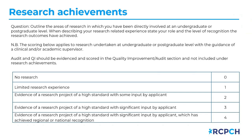The fourth domain is research achievements. Outline areas of research you've been directly involved in at undergraduate or postgraduate level, stating your role and the level of recognition the research outcomes have achieved. This includes research undertaken with guidance of a clinical or academic supervisor. Note that audit and QI should be evidenced in the QI/audit section only. Limited research experience scores one mark; involvement in a high-standard research project with significant input achieving regional or national recognition scores four marks. Definitions are available in the glossary section.